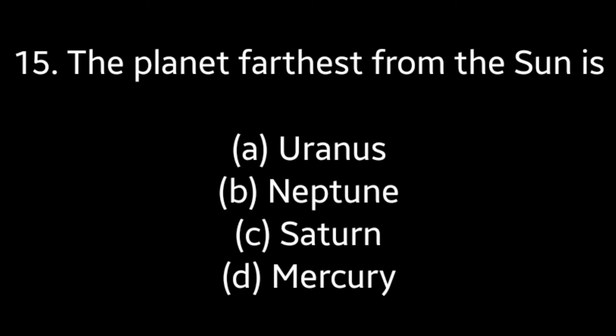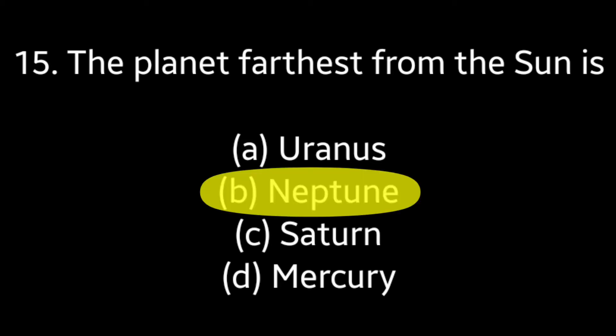Question number 15: The planet farthest from the sun is — Uranus, Neptune, Saturn, Mercury. Answer is option B — Neptune.